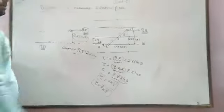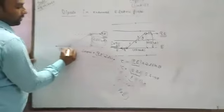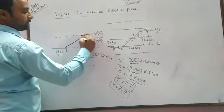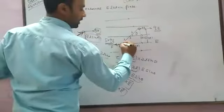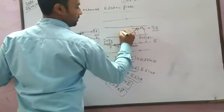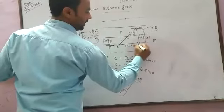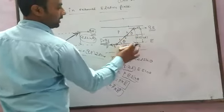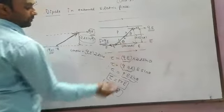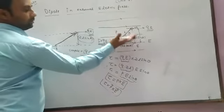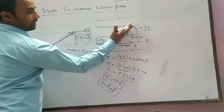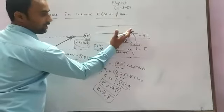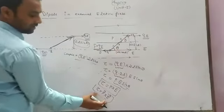We know very well the direction of the dipole is from negative charge to positive charge. Here, this is the direction of dipole P, and this is the direction of the electric field. The angle between them is theta. So the magnitude of torque is PE sin theta, meaning the dipole direction is taken along with the electric field, and this angle theta is what defines the torque.